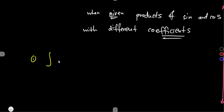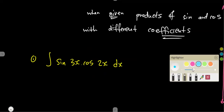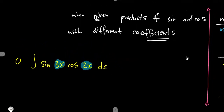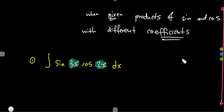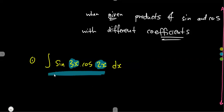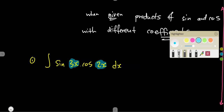Now let's look at this example: the integral of sine(3x) times cosine(2x). As we are given, these are linear — a product of sine and cosine with different coefficients. This is the major part: they have different coefficients, so we are going to apply the product-to-sum identities.